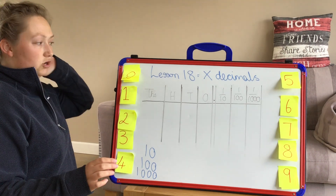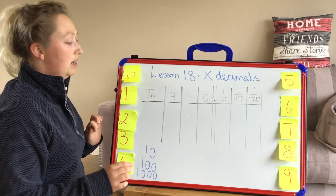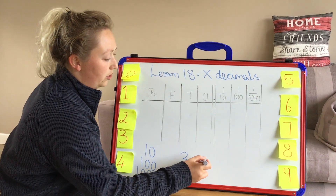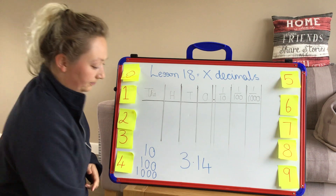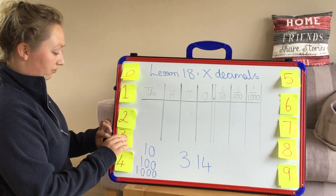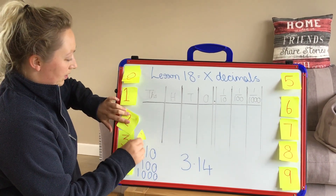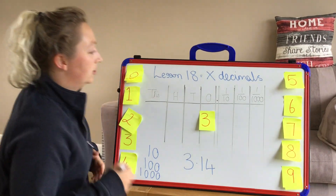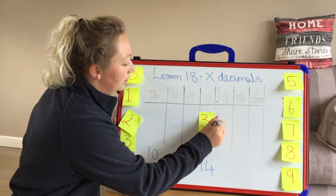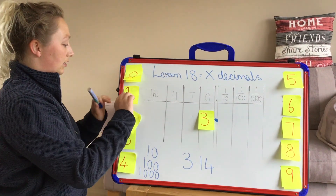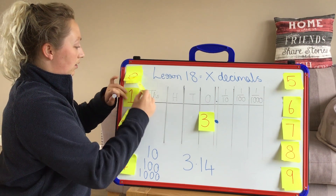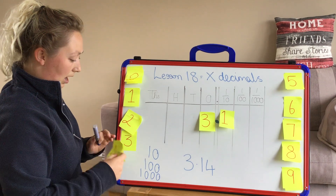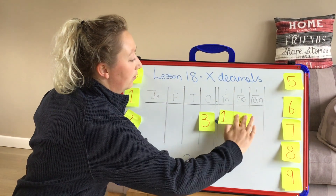So let's create a number. Let's have 3.14. So we need our 3, and where will the 3 go? It'll go in our ones column, then put in our decimal point. 3.14.